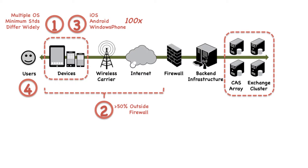Fourth, in our experience working with customers on large deployments, 95% of all mobile issues impact not all users, but only a subset of those users. While Exchange collects a lot of log data and SCOM can tell you when a server is down, they can't alert you to VIP user outages, and they cannot figure out which mobile client or clients are causing the issues and why.